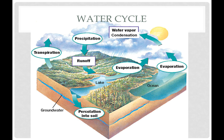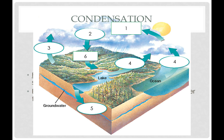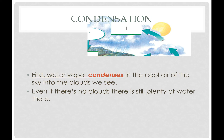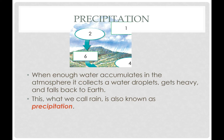We're going to start with the atmosphere. This is what the water cycle looks like — you probably recognize some of the elements here from middle school. We're going to start in the sky. The first thing that happens is when water vapor condenses in the cool air of the sky, and that is how you see clouds. Clouds are essentially just water that's trapped. And even if you don't see clouds, there's still water in the sky. When enough of that water accumulates in the atmosphere and gets too heavy, it will fall down to the earth in the form of rain, or the technical term, precipitation.